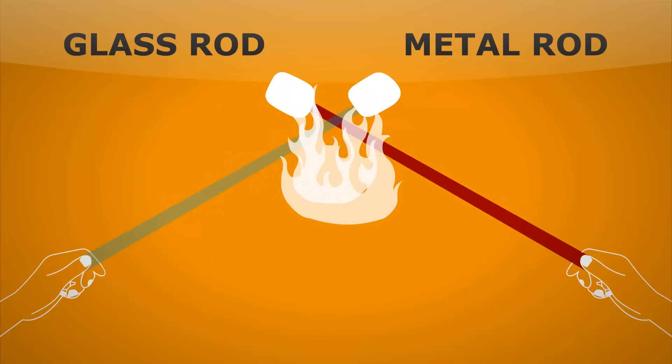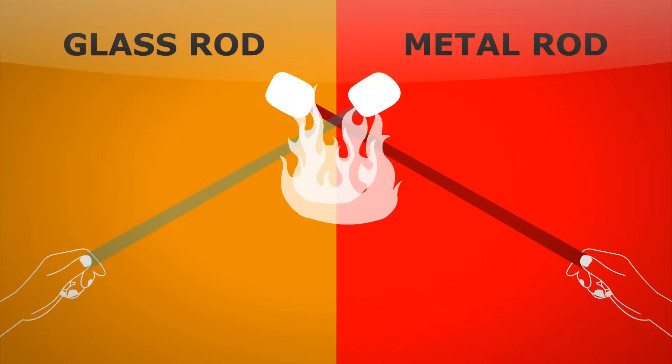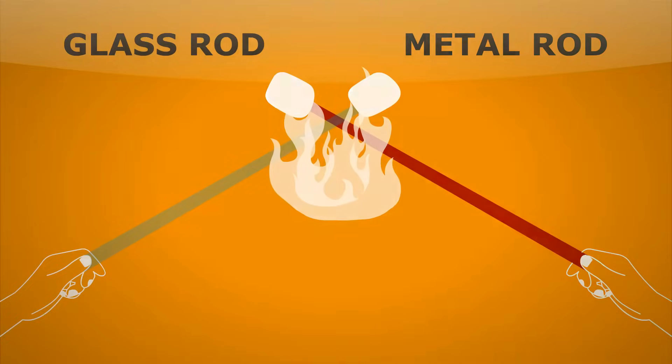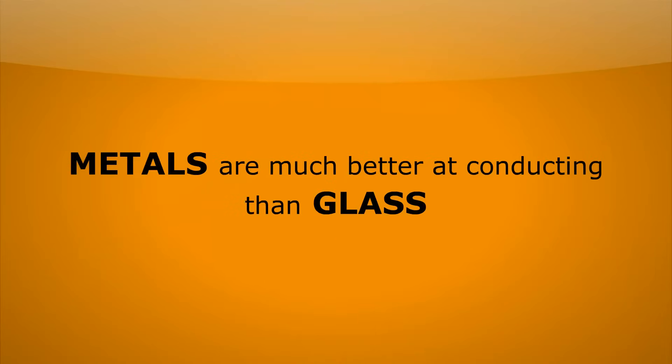Let's wait and see. Oh, there we go. We can see it was the guy with the metal rod. Why do we think that was? Well, actually, it's because metals are much better at conducting than glass. Glass still does conduct, just not as well.